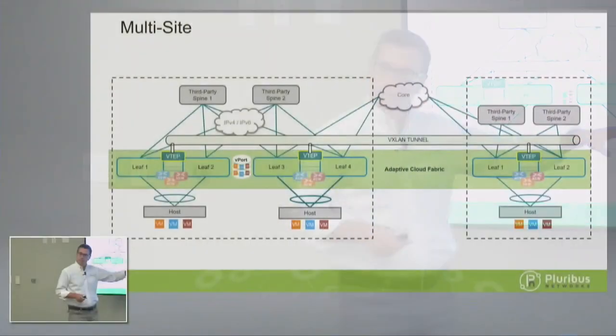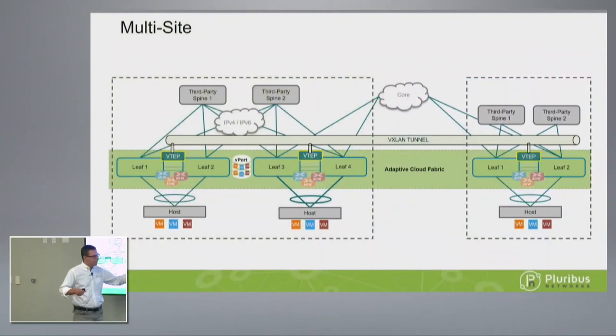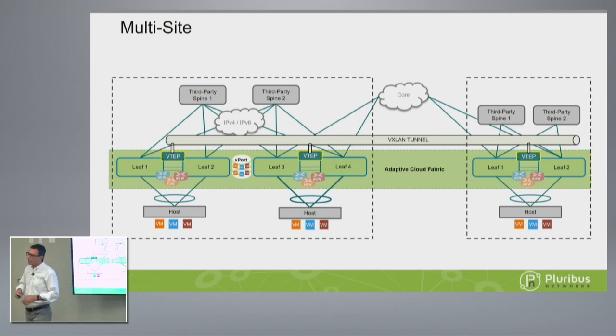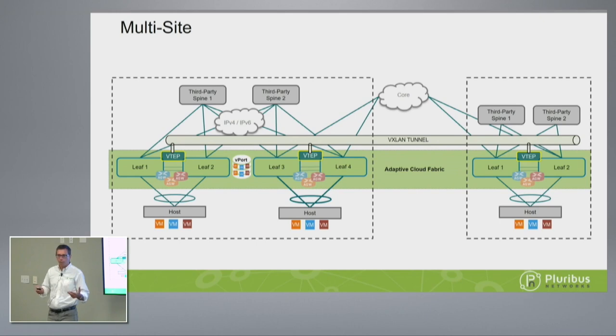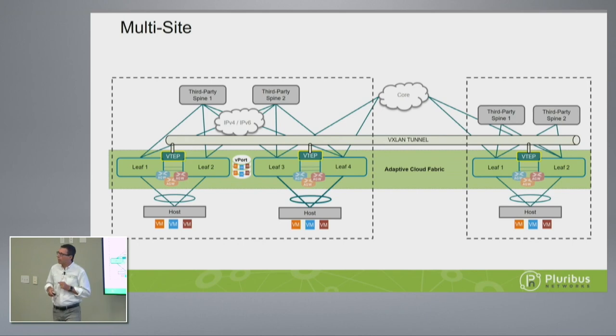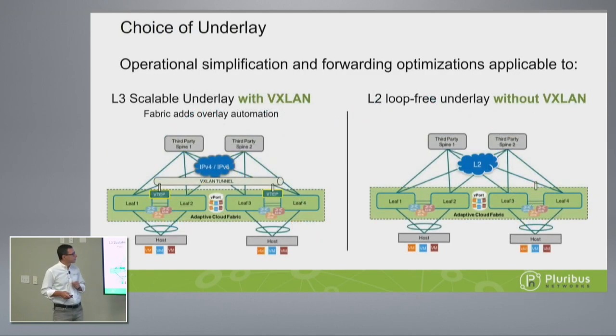Really quickly — because the fabric is geographically independent and distributed, this automation is also available across multiple locations. We don't really have a limit of two or three — we've actually deployed it in up to 10 separate locations. Now, partitioning.